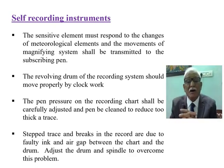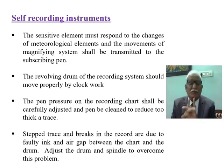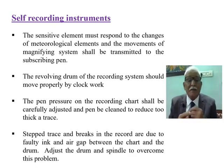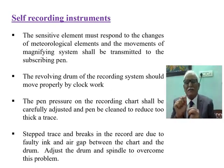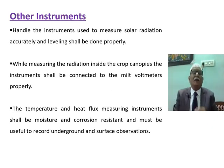The revolving drum of the recording system should move properly by clockwork — in 24 hours, it should record the rise and fall of temperature, humidity, and pressure. The pen pressure on the recording chart should be carefully adjusted and the pen cleaned to produce a neat, single-line trace of minimum width but 100% visible. Also regularly check for any breaks in the recorder trace.